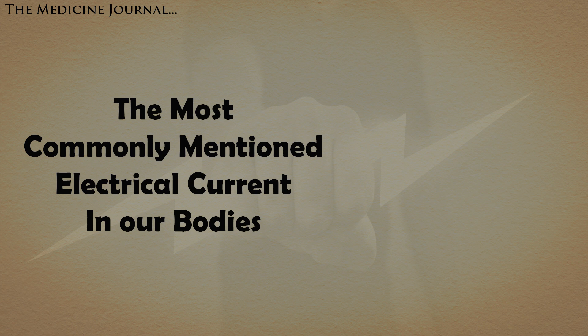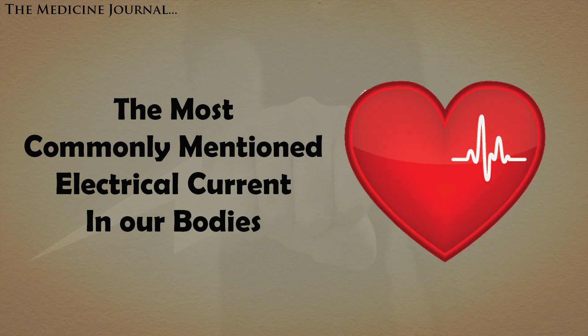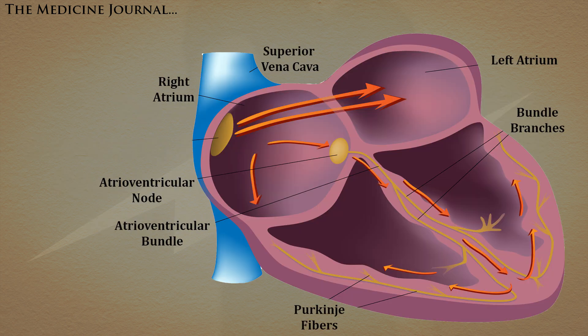Arguably, the most commonly mentioned electrical current within our bodies is the heart rhythm. Hearts contain within them a grouping of cells known as your sinoatrial node, or SA node.